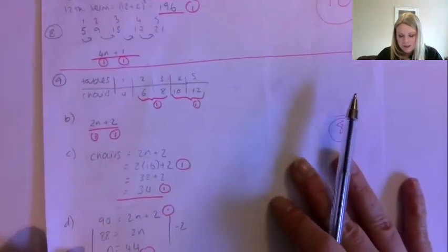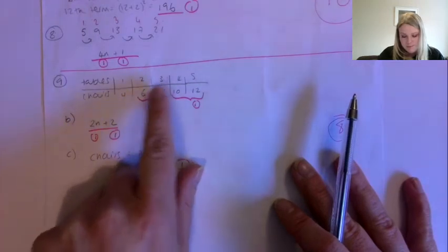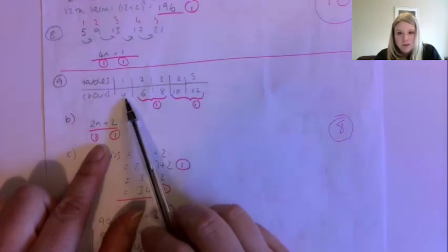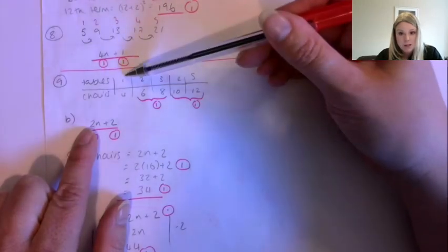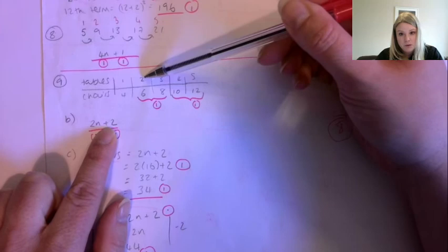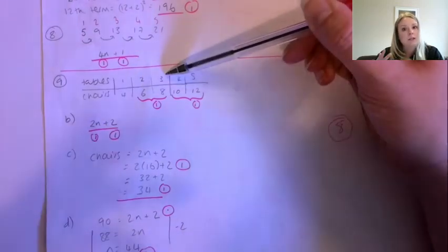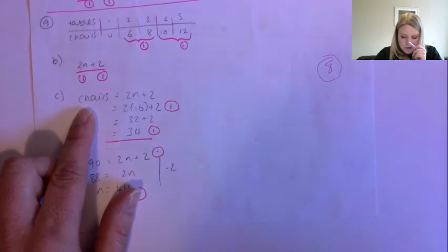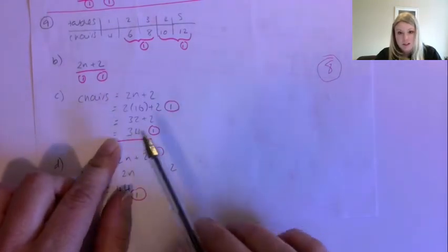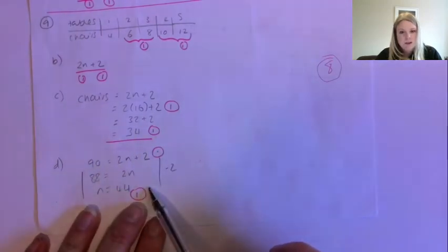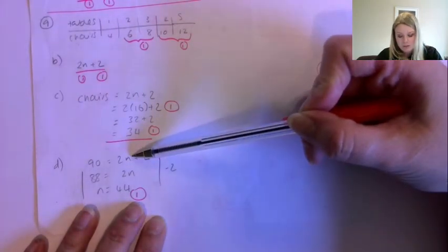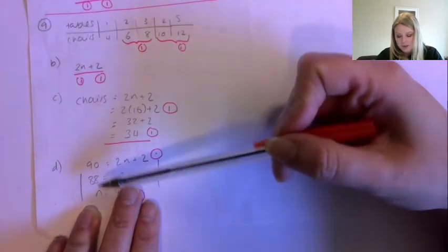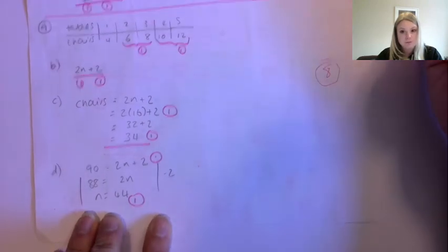Question 9 involved a tables and chairs pattern. Well done generally on finding the missing numbers. The chairs were going up by 2 every time, so the rule starts with 2n. Checking: 2 times 1 is 2, add 2 gives 4; 2 times 2 is 4, add 2 gives 6 — so the rule is 2n plus 2. When the number of chairs was 90 and we had to find the number of tables, we subtract 2 from both sides first to get 88, then divide by 2 to give 44 tables.